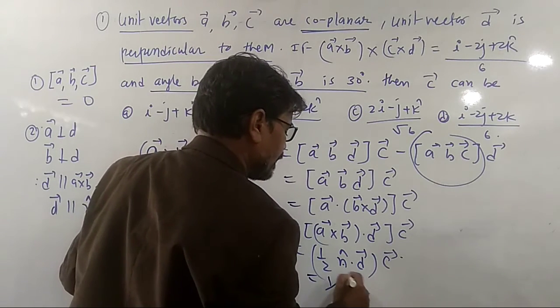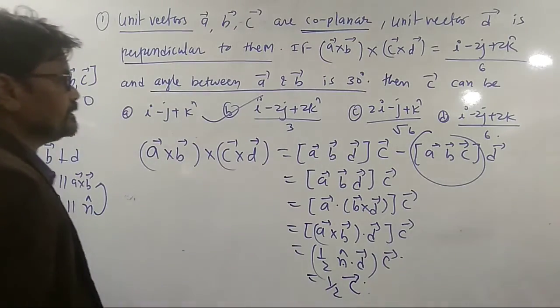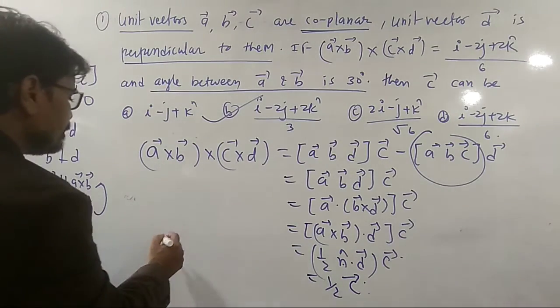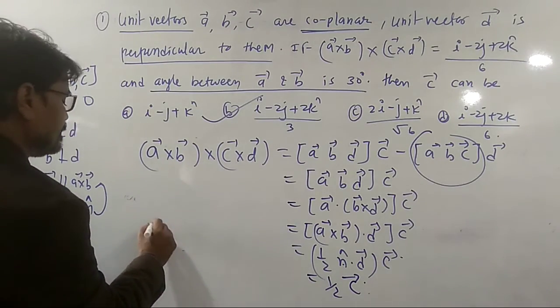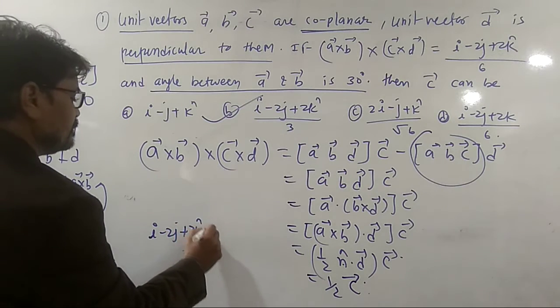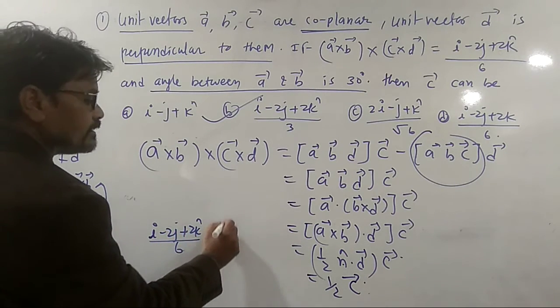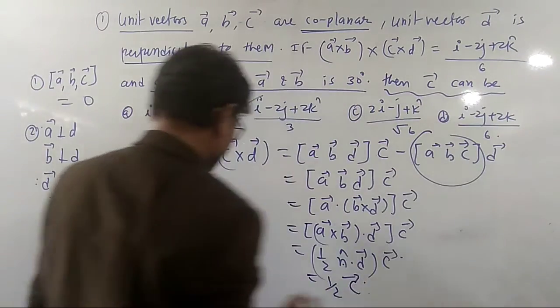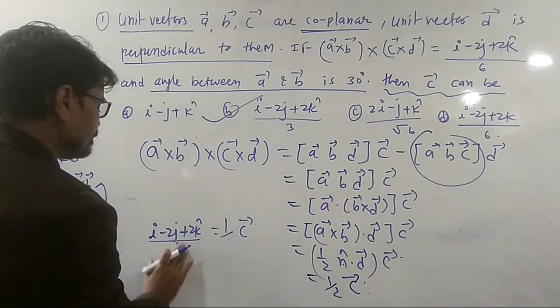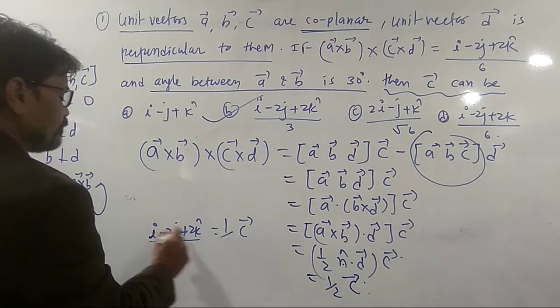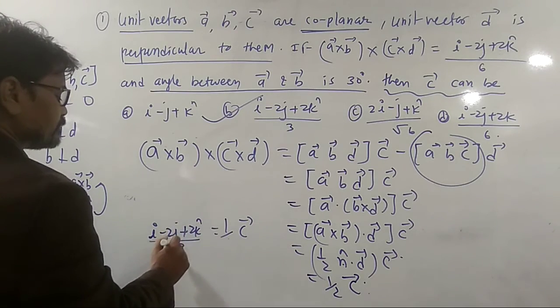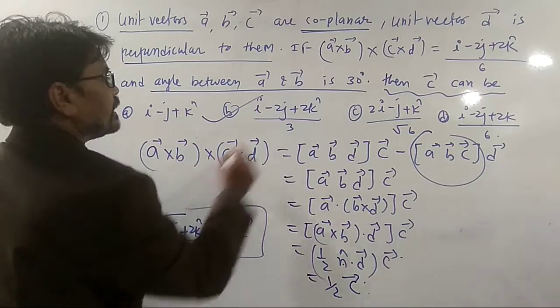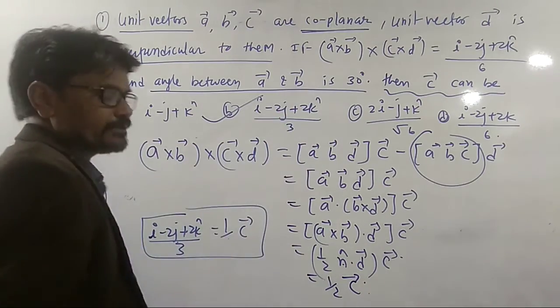This is finally half of C. This is given as I minus 2J plus 2K divided by 6, and this has come as half of C. We have to find out what is C. So half will get cancelled here. So C equals I minus 2J plus 2K divided by 3.